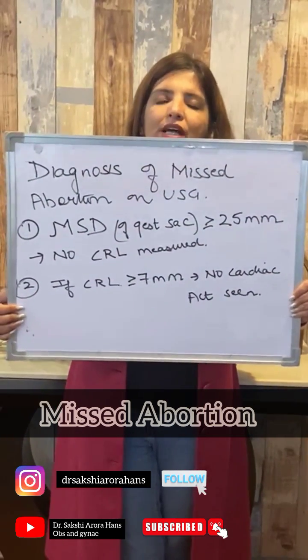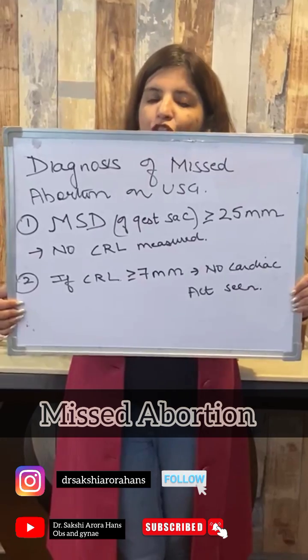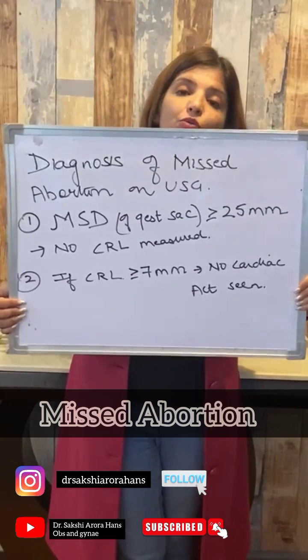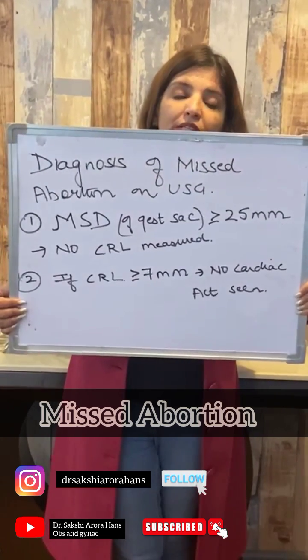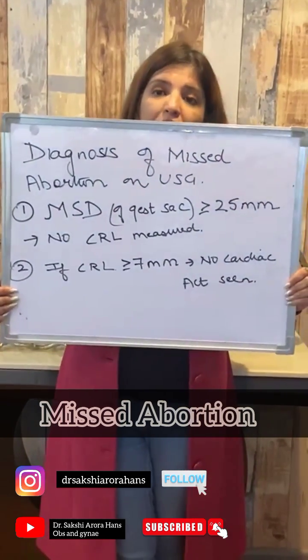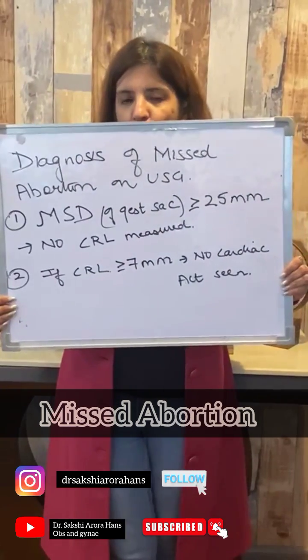Or if fetal poles are seen, crown-rump length can be measured, and it has become more than or equal to 7 mm but cardiac activity has not appeared, then that also indicates missed abortion.